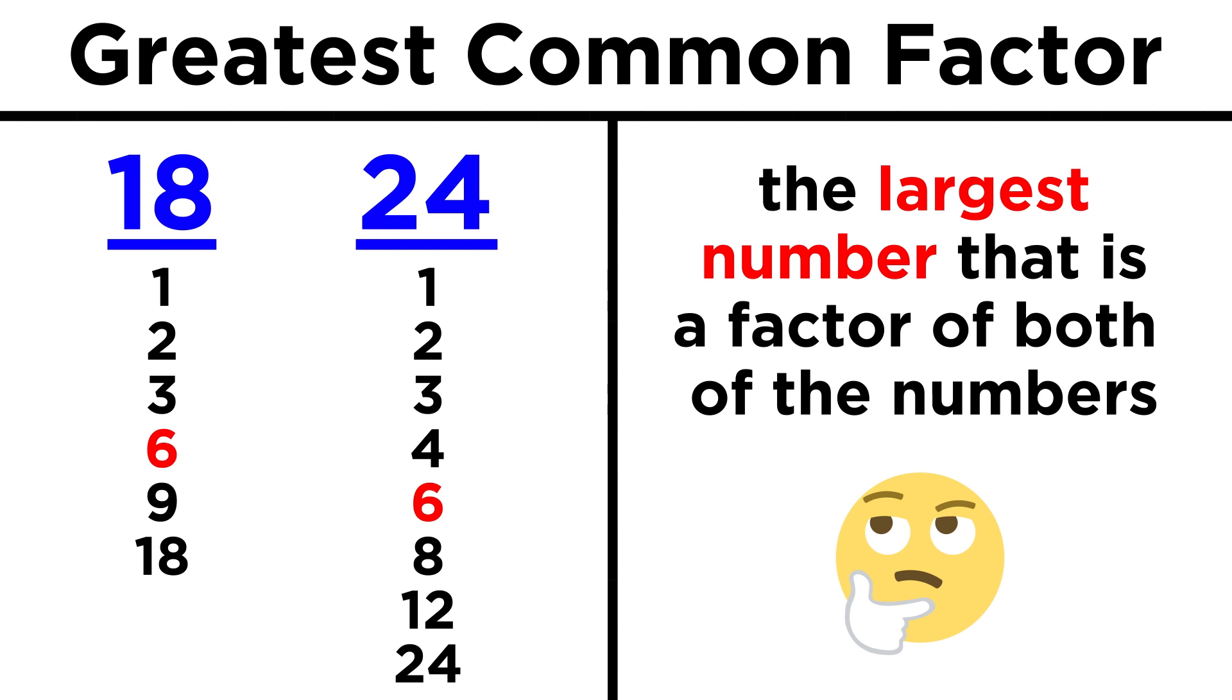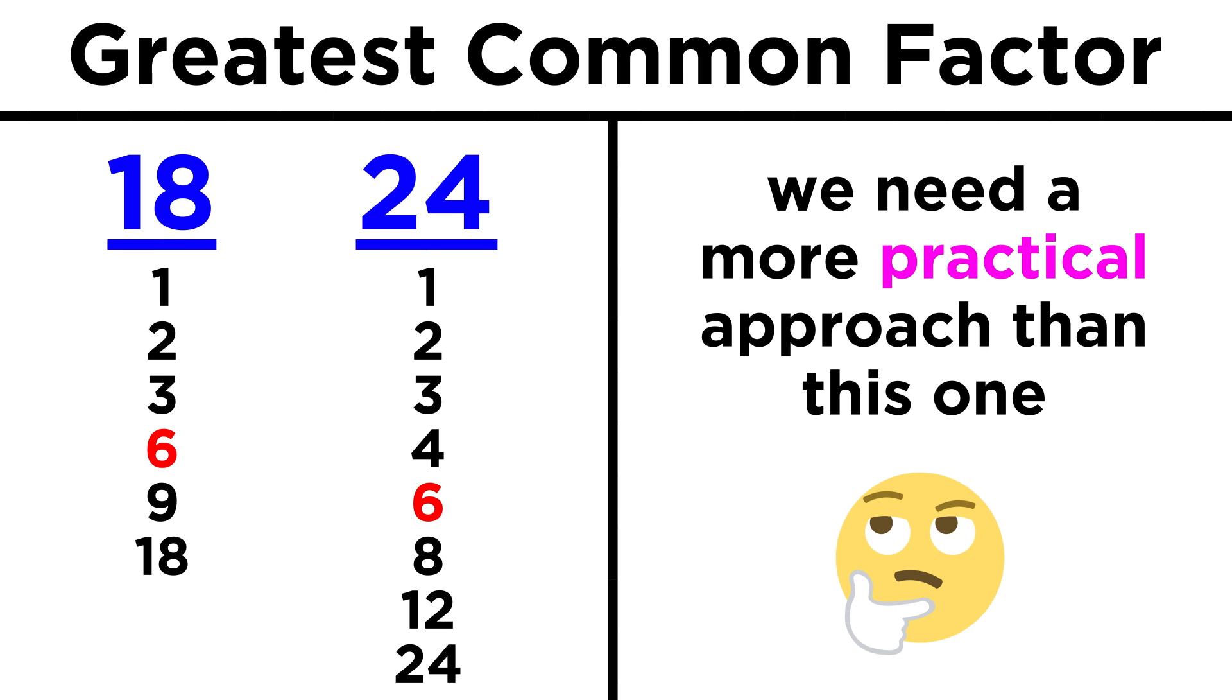Just like with the least common multiples, this is easy to do for small numbers because they will have only a handful of factors, so we can just list them all and compare. But again, as numbers get larger, it may become tedious to identify and list every single factor for a number, so there is a bit of a trick to this as well.